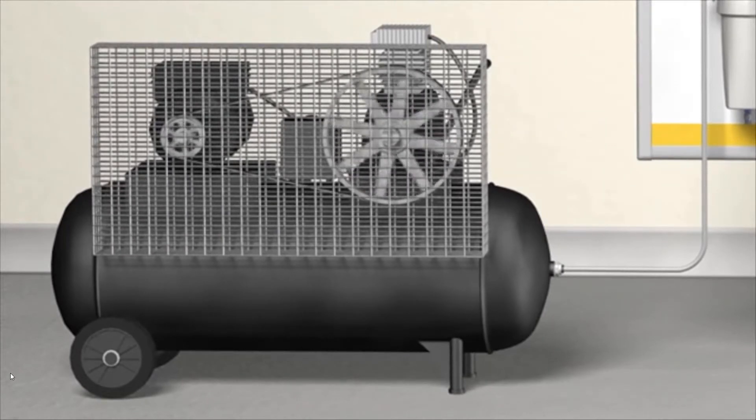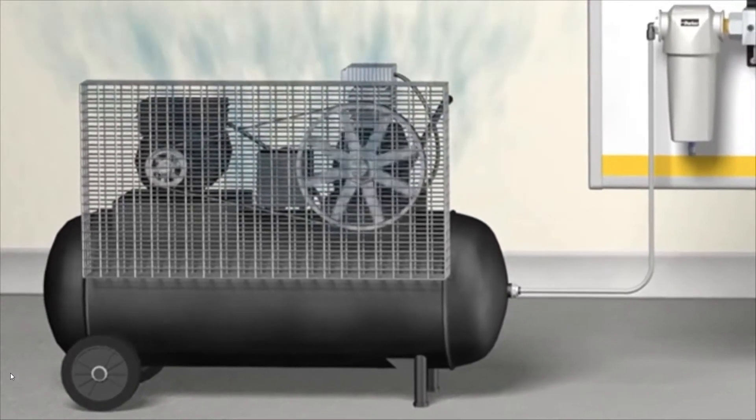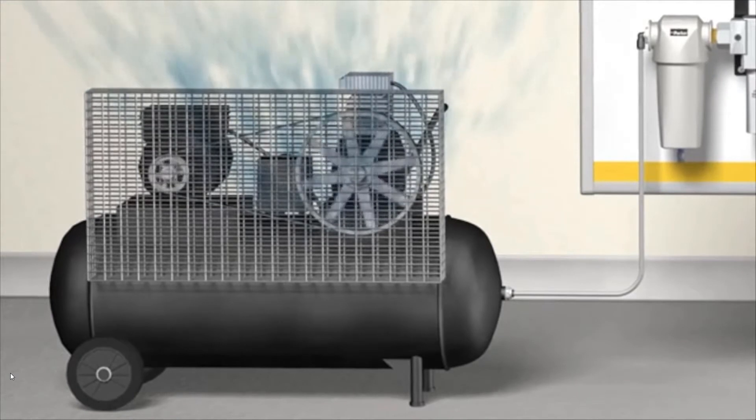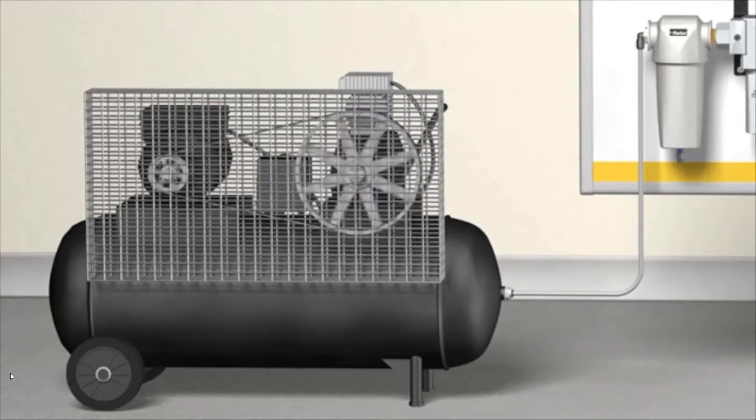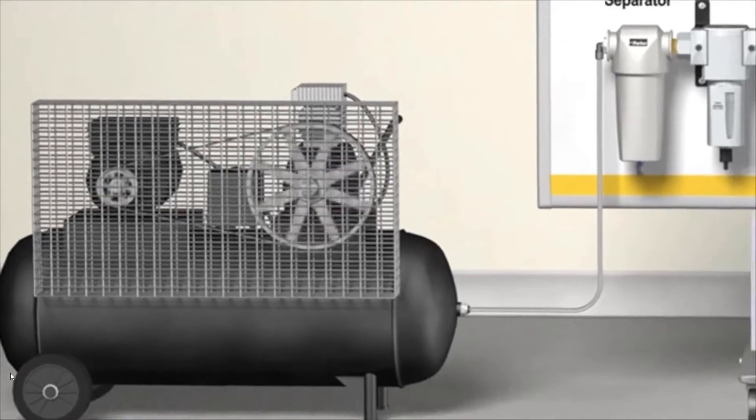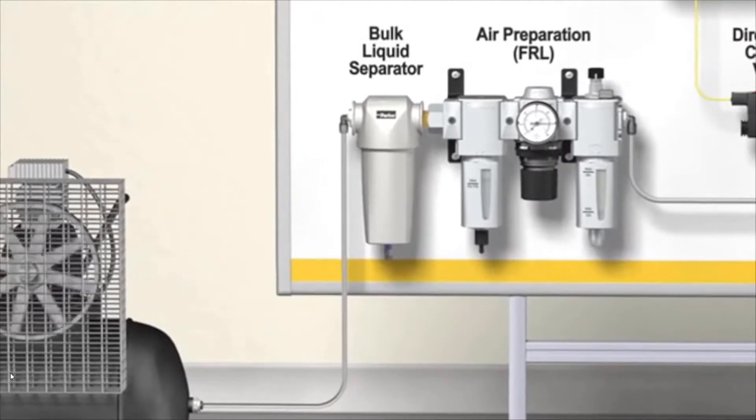The compressor generates the energy that powers the system in the form of compressed air. In order to generate compressed air, the compressor draws in atmosphere from its surroundings and squeezes it or confines it into a smaller space, creating the energy needed to drive the system. Once compressed, the air needs to be dried and cleaned so that harmful particulates such as rust or dirt does not clog up the moving parts in the system.